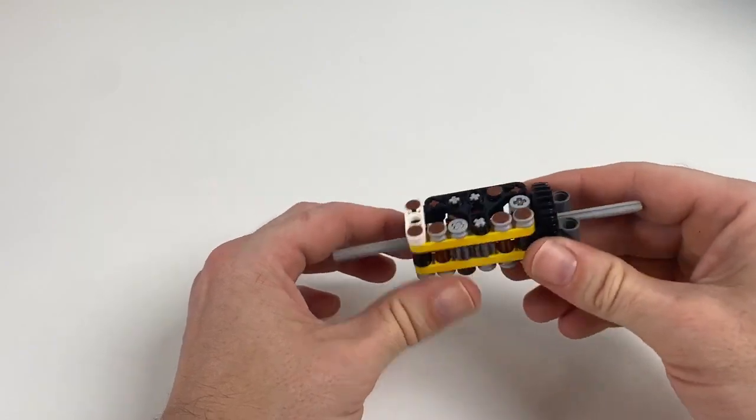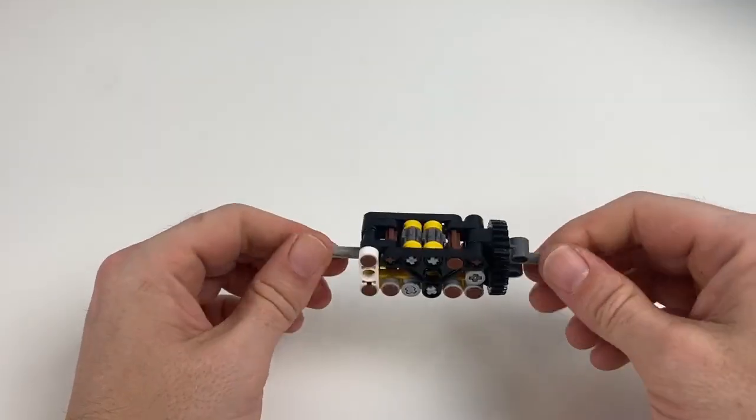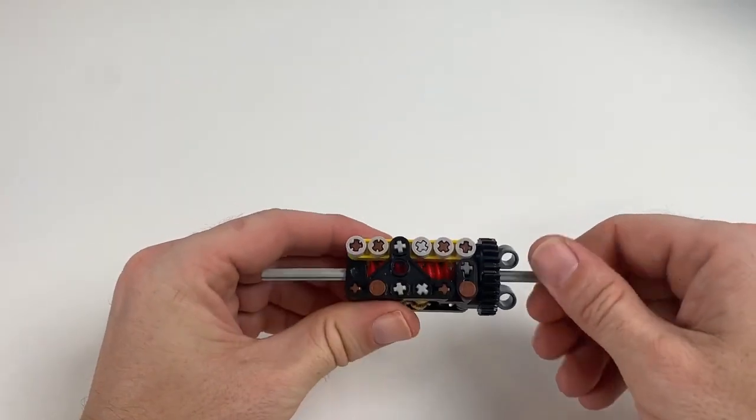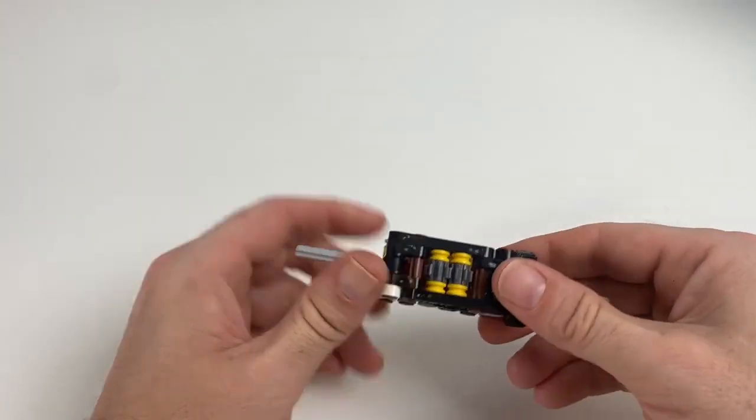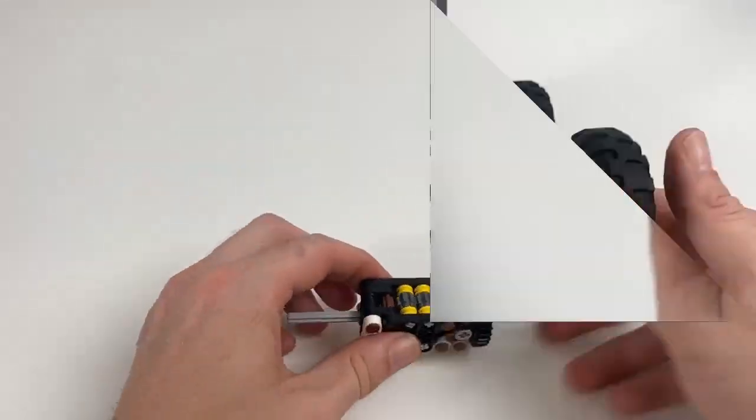Also worth noting, as with all of these builds, you can actually just have half of the turntable at the end, so the little grey pin holes can be removed and you can install that differently into a device. It depends how you want to actually implement that in a build.